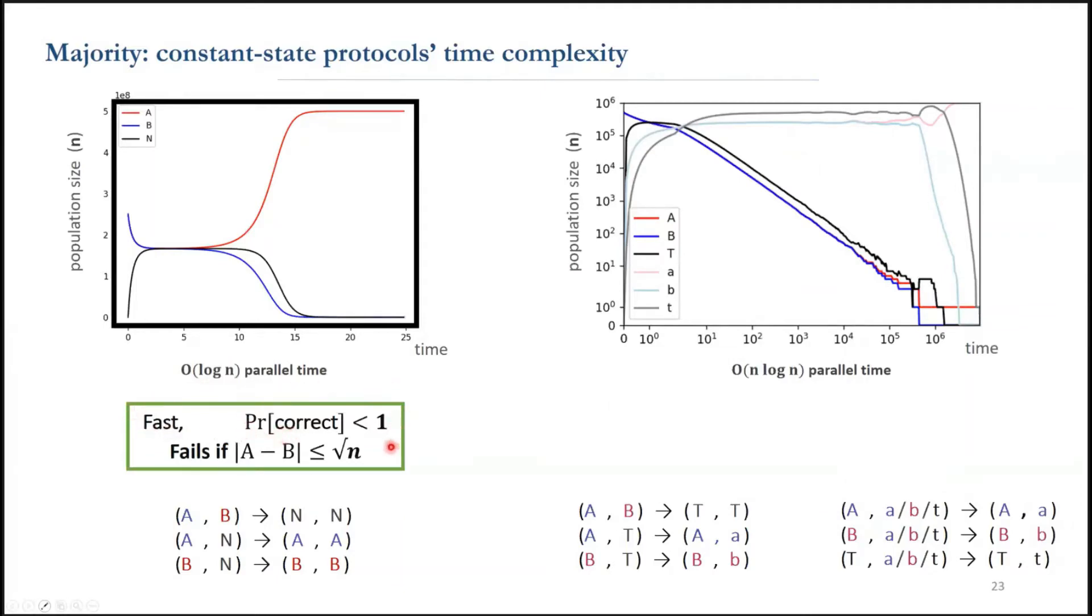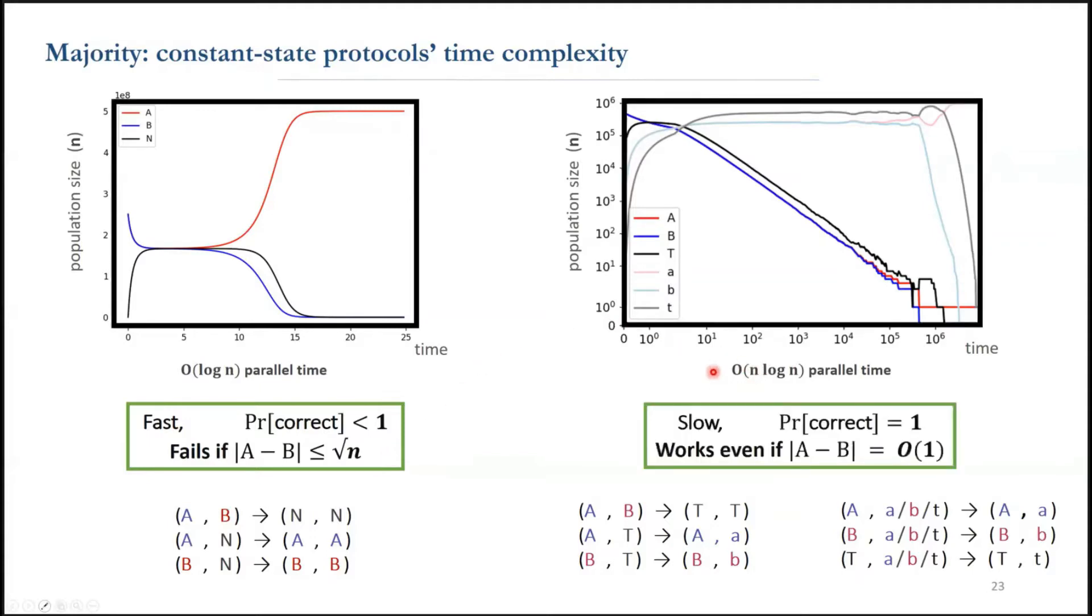More concretely, if it's less than square root of n, there's one half chance that it gets it wrong. On the other hand, the second protocol converges correctly to the majority from any initial configuration, but it takes exponentially slower than log n time.